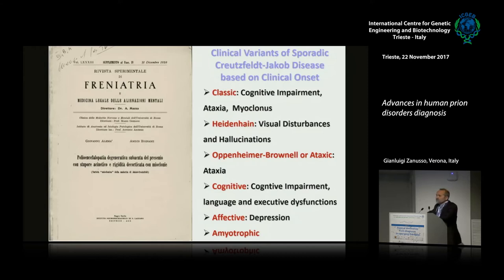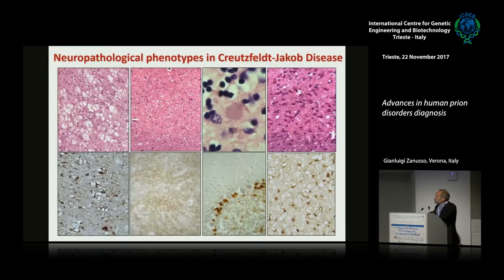In the past, in 1959, Alema and Bignami were the first to make a grouping of different clinical variants of Creutzfeldt-Jakob disease. They divided it into classic — characterized by cognitive impairment, ataxia, myoclonus, hallucination — the ataxia form, the cognitive form, the affective, and the amyotrophic. If we look at the neuropathology of CJD, there are different patterns of spongiosis as well as different patterns of PRP deposition. Even the MRI might be variable in CJD.